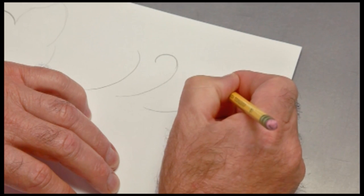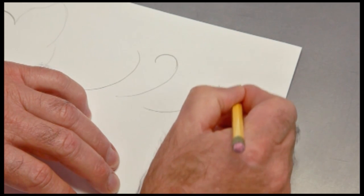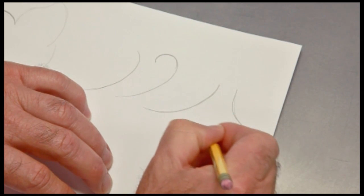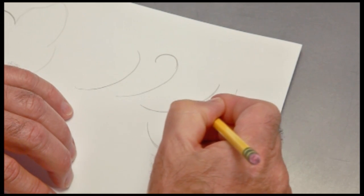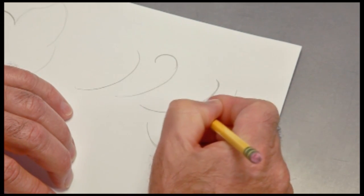They can curve counter-clockwise, clockwise, down, up, doesn't matter. What we're looking at here is simply the shape. The shape is a gentle curve or a hook.